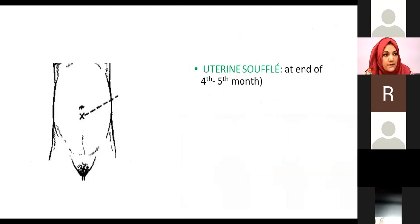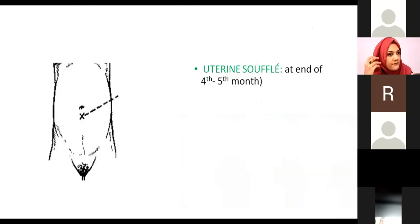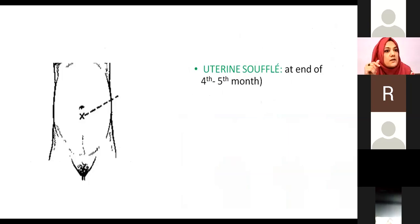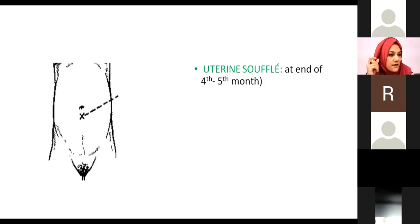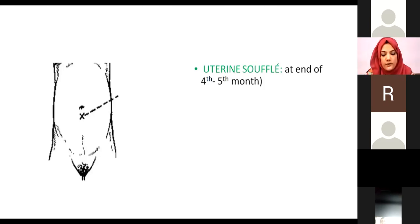The uterine souffle refers to uterine soft blowing murmurs that can be elicited by auscultation on the uterus using a fetoscope or stethoscope placed on the side of the uterus. These soft blowing murmurs are not fetal heart sounds — they are caused by the flow of maternal blood through the uterine vessels. They can be appreciated from 4 to 5 months onwards.